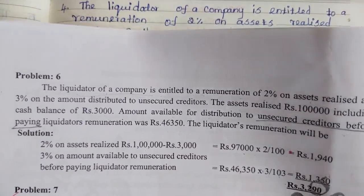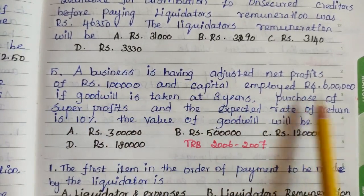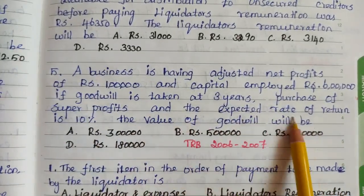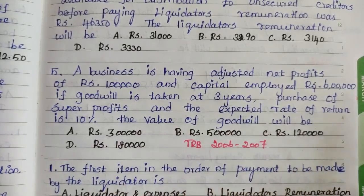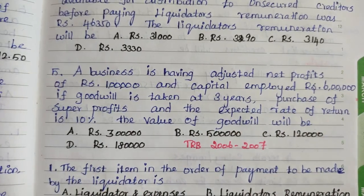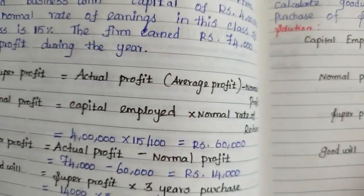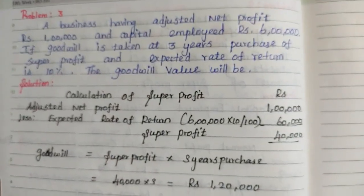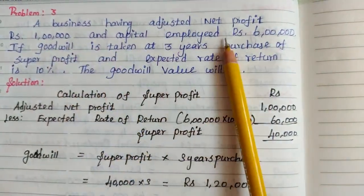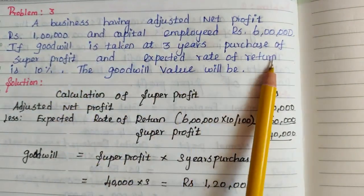If the rate of return is 10%, the value of goodwill will be calculated using the super profit method. In the previous video, the goodwill calculation was already explained in detail. This question: a business having adjusted net profit of Rs.1 lakh, capital employed Rs.6 lakh, goodwill taken at 3 years purchase, expected rate of return 10%.